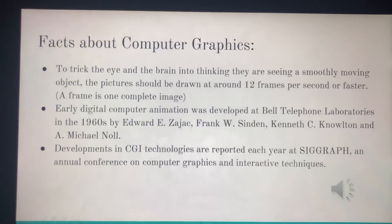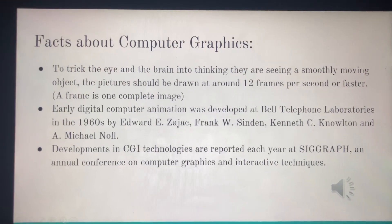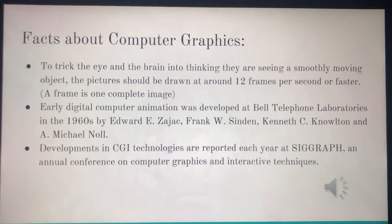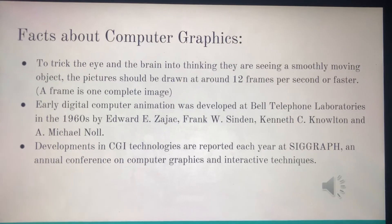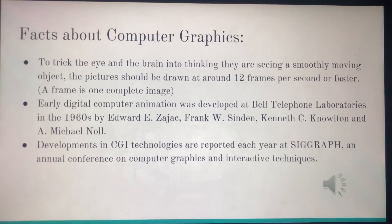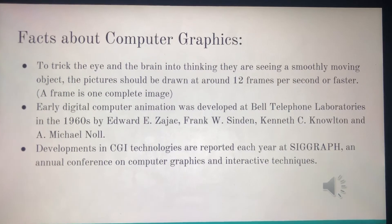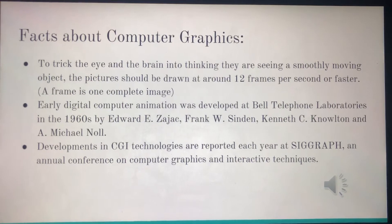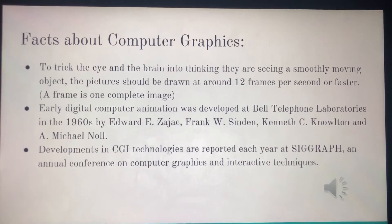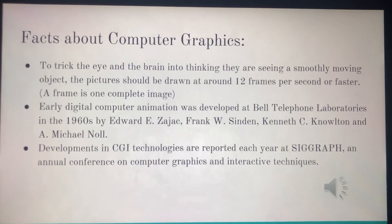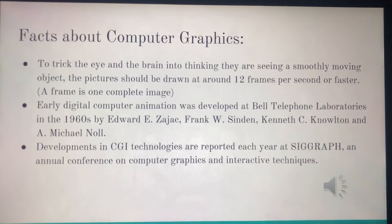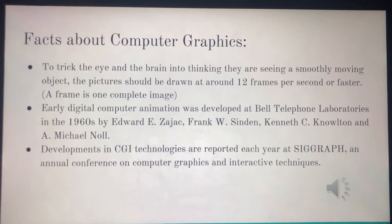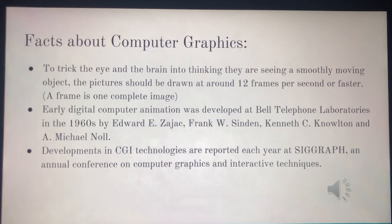Some facts about computer graphics: to trick the eye and the brain into thinking they are seeing a smoothly moving object, pictures should be drawn at around 12 frames per second or faster, and a frame is one complete image. Early digital computer animation was developed at Bell Telephone Laboratories in the 1960s by Edward E. Sajak, Frank W. Sinden, Kenneth C. Knowlton, and Michael Knowl.